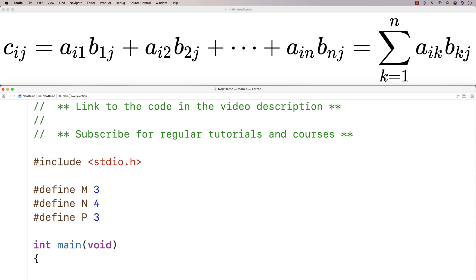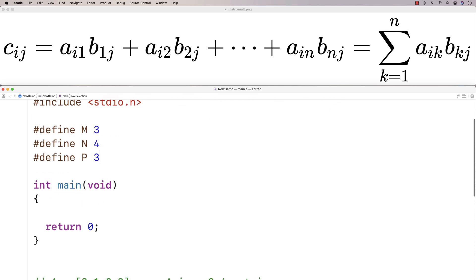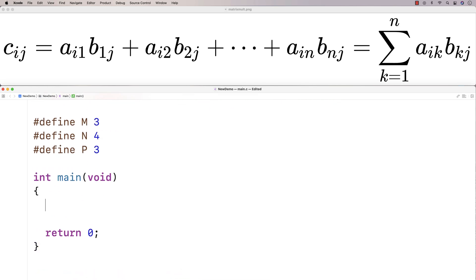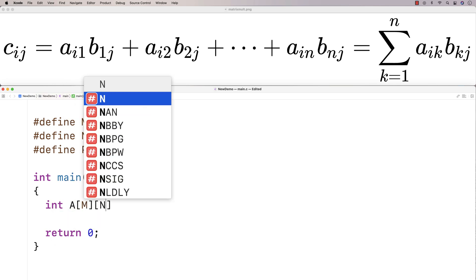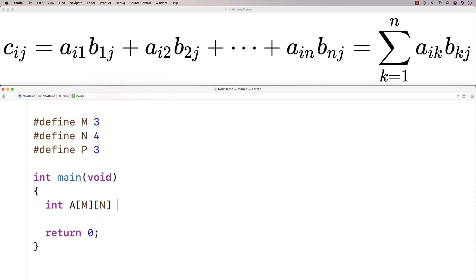And we use the exact same data as in our example there. So next I'll declare a 2D array called A. So we'll say int A[M][N]. So it's going to be a 3 by 4 2D array with 3 rows and 4 columns.